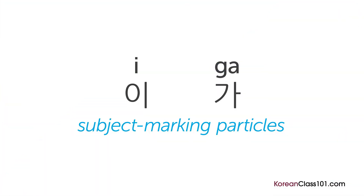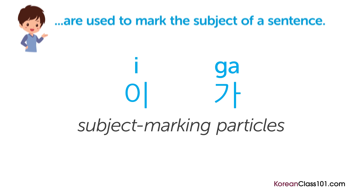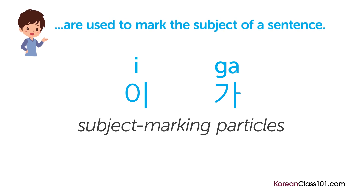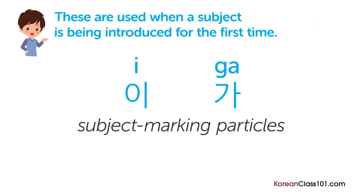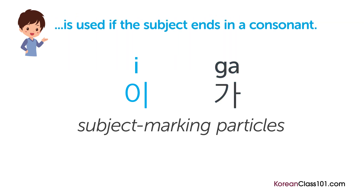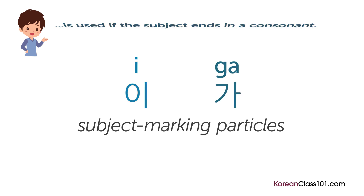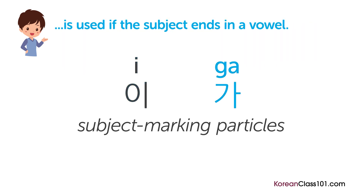The subject marking particles 이 and 가 are used to mark the subject of a sentence. These are used when a subject is being introduced for the first time. 이 is used if the subject ends in a consonant, and 가 is used if the subject ends in a vowel.